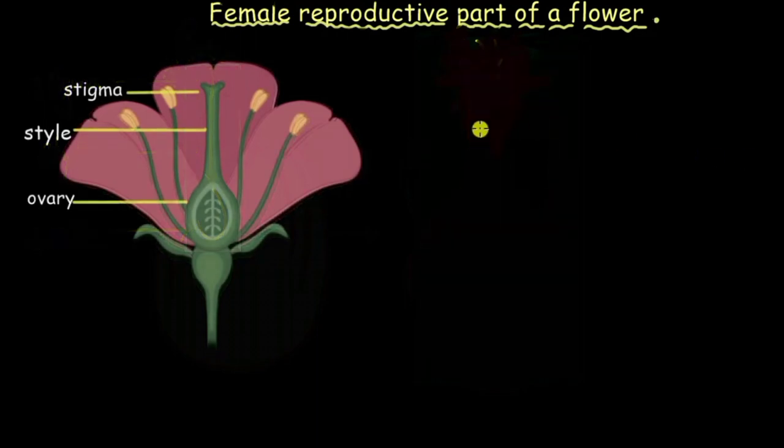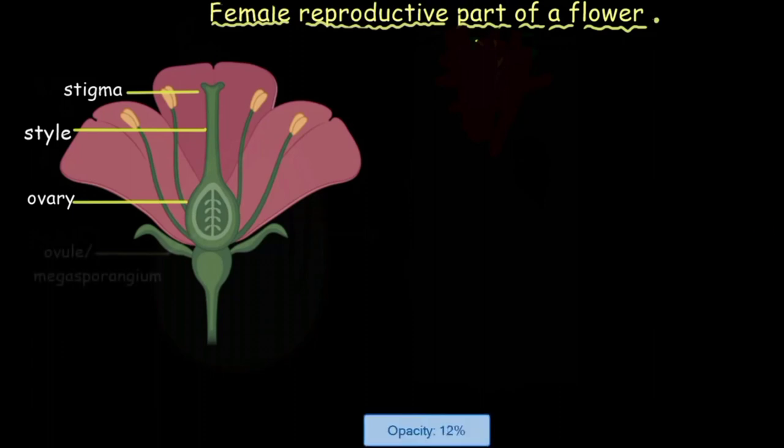Now if you have a closer look at this ovary area you will see that there are small lobe-like structures attached to a stalk-like thing. These small lobes are nothing but I like to call them the homes in which the female gamete will start growing. And these lobules or the lobes are called ovule.